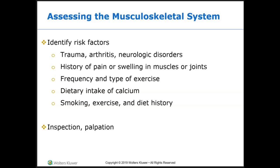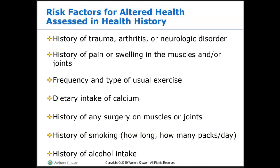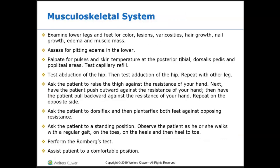Identifying risk factors for musculoskeletal health: has there been any trauma? Is there arthritis or neurological disorders? History of pain or swelling of muscles or joints? Do they exercise, and what's the frequency and type? Do they take calcium supplements? What's their diet, and do they smoke? Have they had any surgeries on their muscles or joints? History of smoking — how long and how many packs per day? If they've been drinking, how long and how much per day? You can see where the amount they drink or smoke could progressively worsen outcomes.